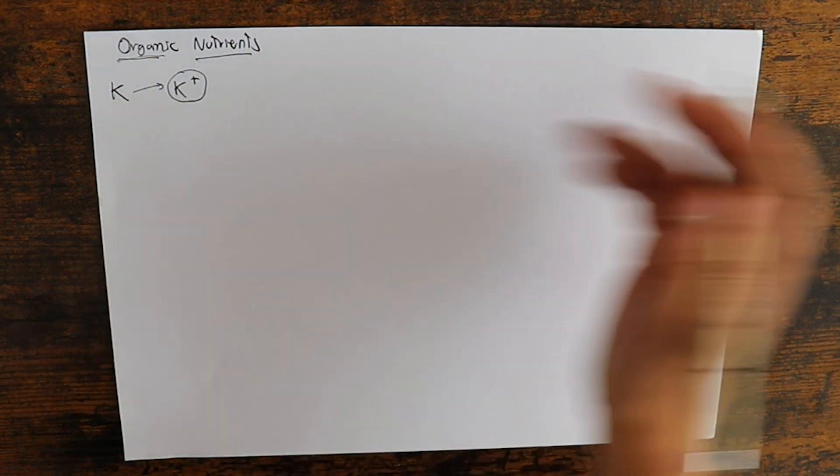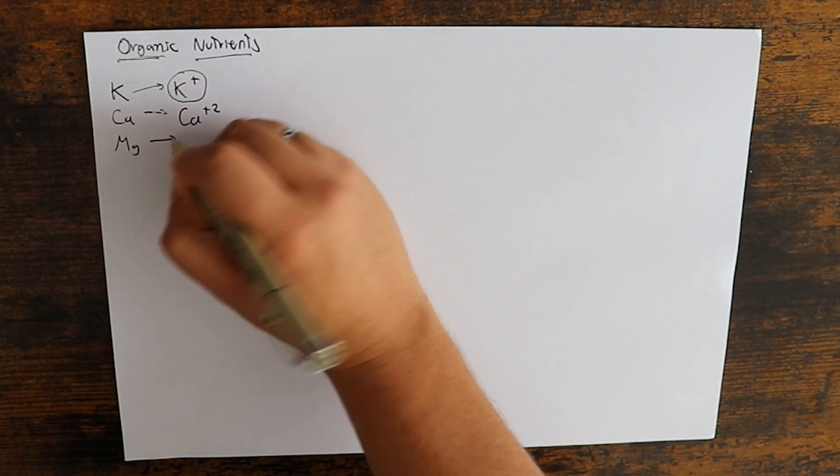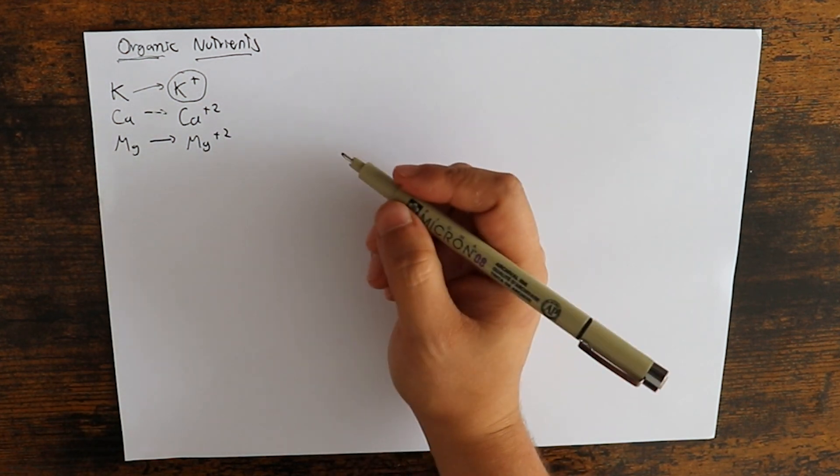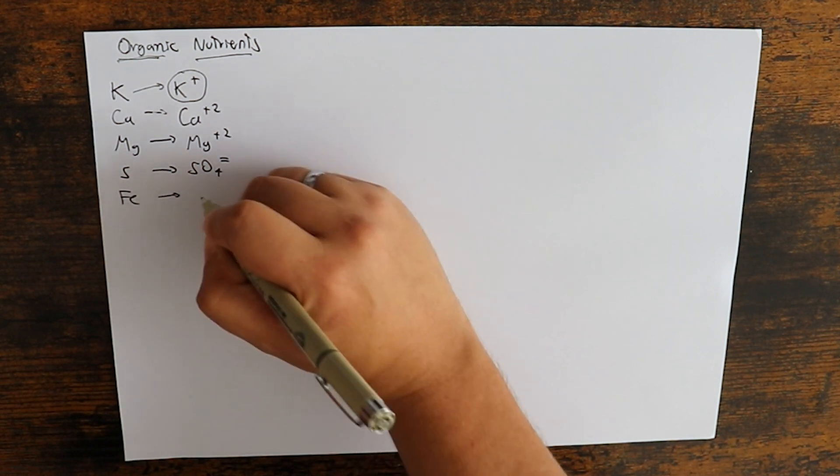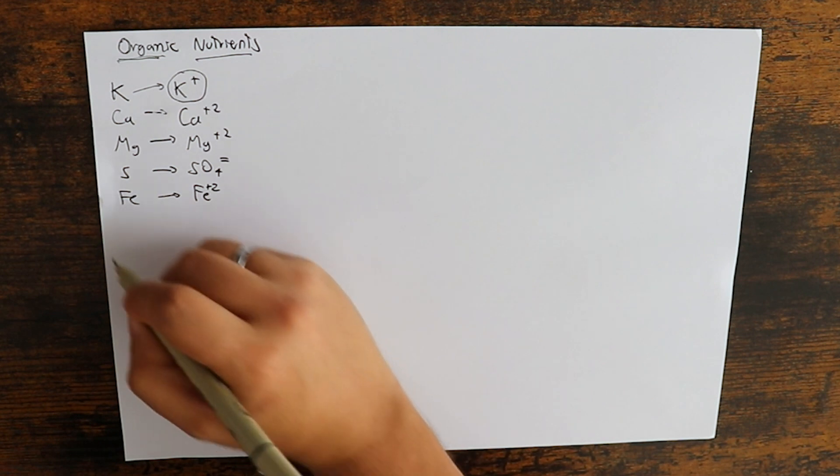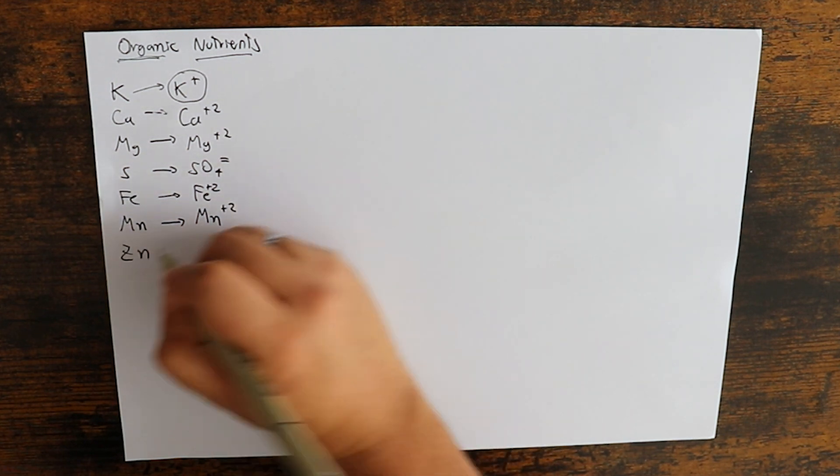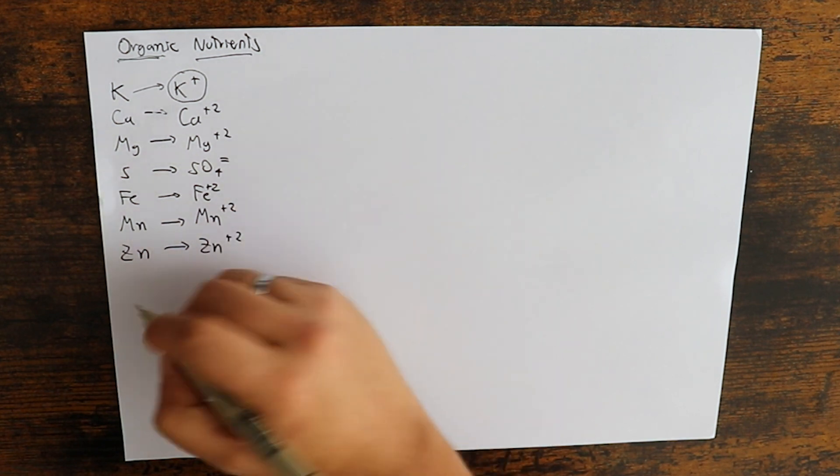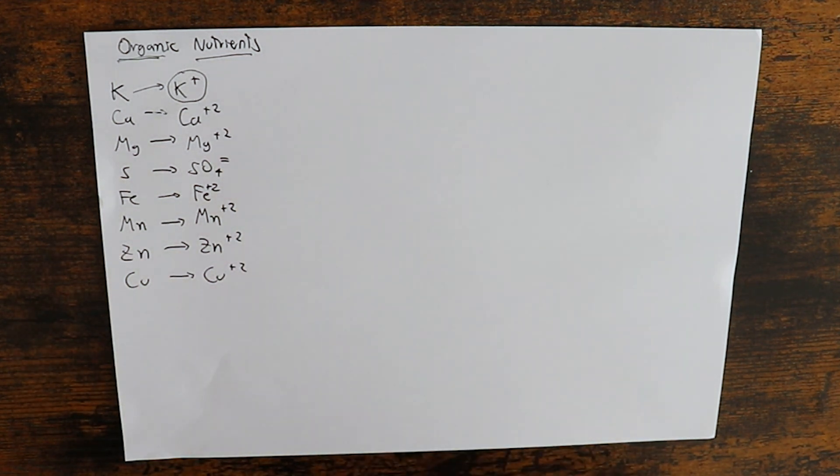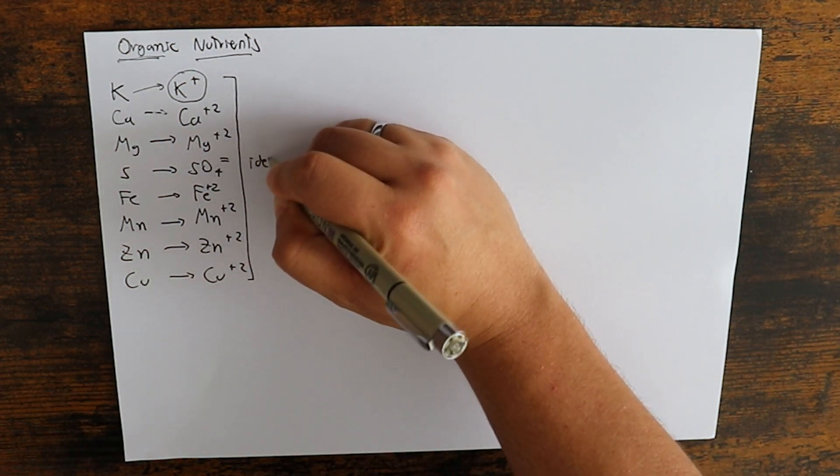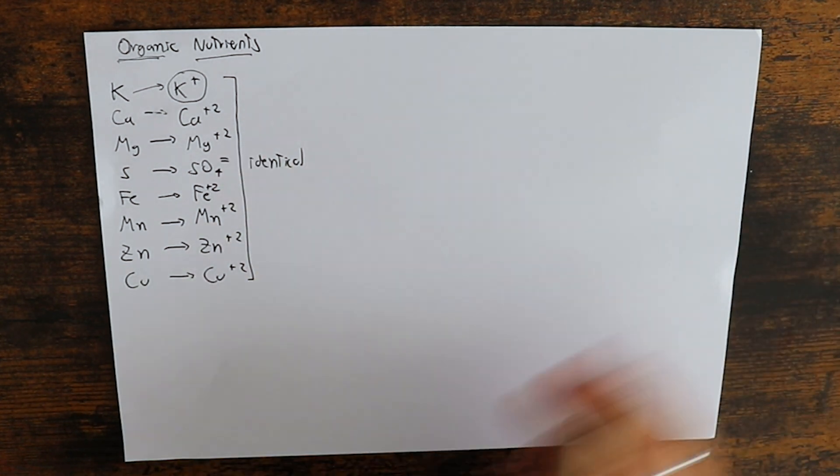So no matter where this potassium comes from, whether it comes from fish emulsion or whether it comes from a synthetic salt such as potassium nitrate, it will always be the exact same thing chemically. So there is absolutely no difference and we have a bunch of ions for which this is the exact case. For example, we have calcium which is taken as Ca2+, magnesium which is always taken as Mg2+, the exact same thing regardless of the source. We have sulfur which is taken as sulfate, we have iron which is taken up as iron, normally Fe2+ sometimes Fe3+ but mostly Fe2+, manganese which we see taken up mostly as Mn2+, zinc which is taken up as Zn2+, and then copper which is taken up as Cu2+.